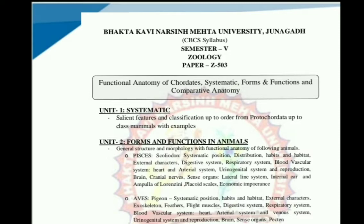Now we are going to discuss Scoliodon and study its systematic position, distribution, habit and habitats, external characters, digestive system, respiratory system, blood vascular system, heart and arterial system, urinogenital system and reproduction, brain, cranial nerves, sense organs, lateral line system, internal ear, ampullae of Lorenzini, placoid scale, and economic importance.